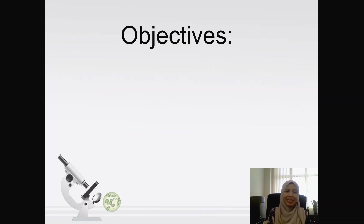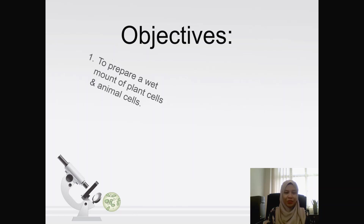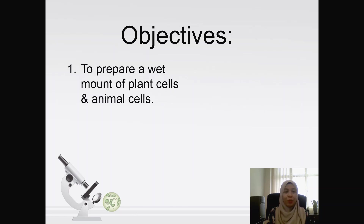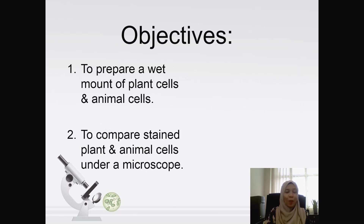There are two objectives in doing this experiment: to prepare a wet mount of plant cells and animal cells, and to compare the stained plant and animal cells under a microscope.